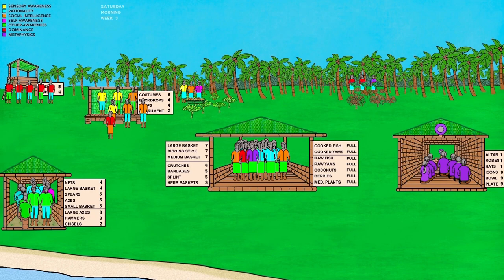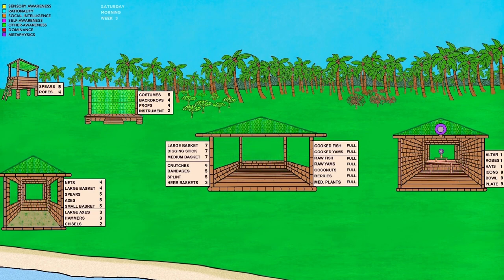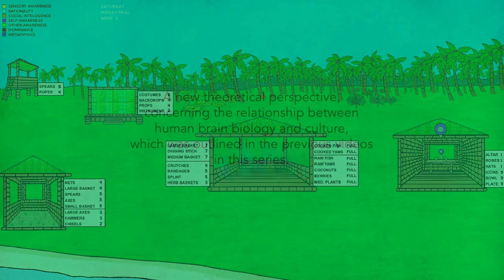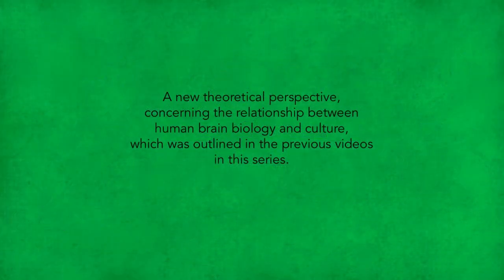The intention is to approximate the underlying processes that create, maintain, and change all human cultures. And importantly, this simulation is only possible because it's based on a new theoretical perspective concerning the relationship between human brain biology and culture, which was outlined in the previous videos in this series. There's a link in the description.